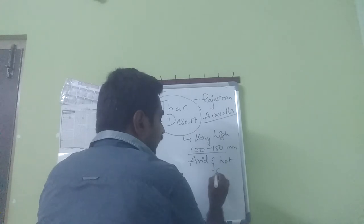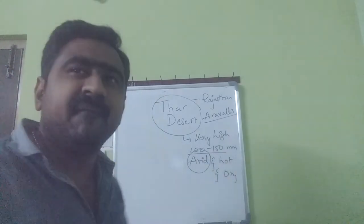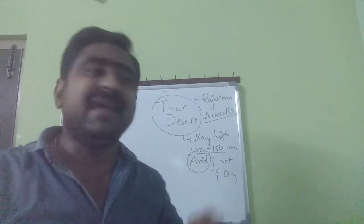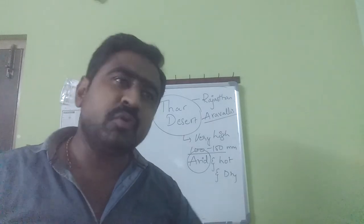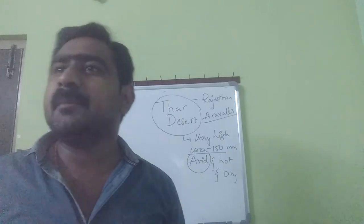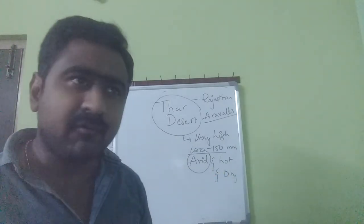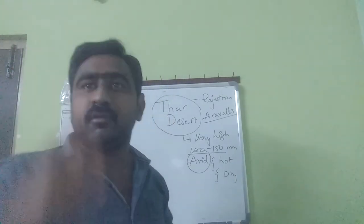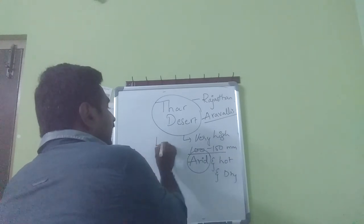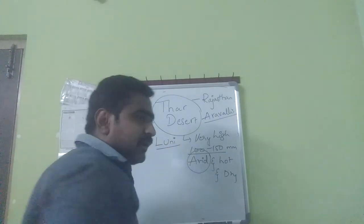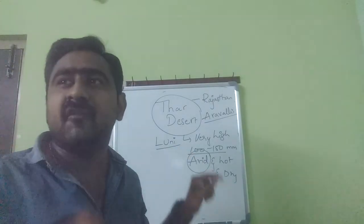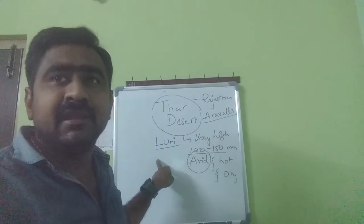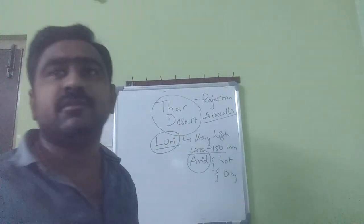The climate of Thar Desert is very arid — hot and dry. The average annual rainfall is 100 to 150 mm. There is only one river flowing through the Thar Desert, and that river is called Luni (L-U-N-I). This is very important for examinations — Luni is the only river flowing through the Thar Desert.